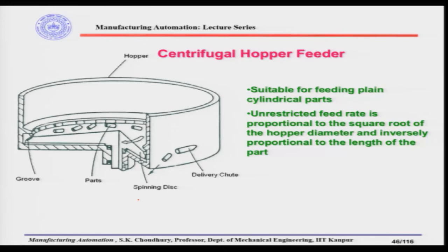There is another hopper feeder called the centrifugal hopper feeder. In the centrifugal hopper feeder the working principle is very different. There is a closed hopper whose base rotates at a velocity that generates centrifugal force. The parts are located at the base, and at the outer periphery of the inner hopper wall there are slots.